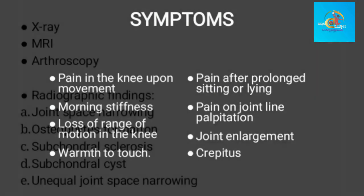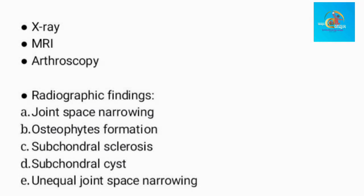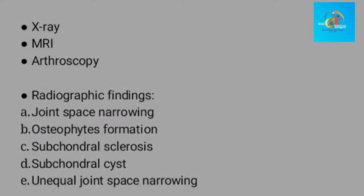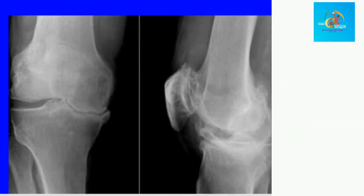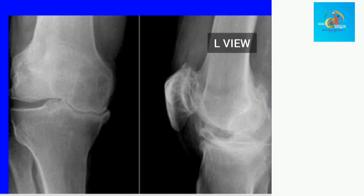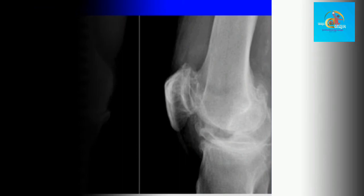Diagnostic procedures may involve X-ray, MRI, and arthroscopy. Radiographic findings may involve joint space narrowing, osteophyte formation, subchondral sclerosis, subchondral cysts, and unequal joint space narrowing. This is an X-ray of an osteoarthritic knee, and some of the radiographic findings explained earlier can be traced in this image. On the AP (anterior-posterior) view, there is clearly reduced joint space and unequal joint space narrowing, while osteophyte formation is more evident on the lateral view.